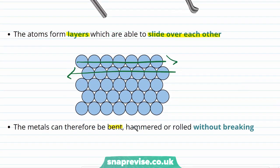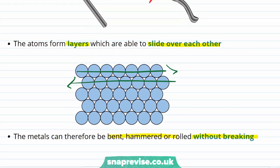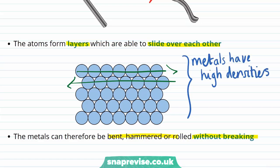This layered structure means that metals can be bent, hammered or rolled without breaking. A final point that you can see from this diagram is that metals have high densities. This is because they contain lots of ions packed close together with not very many gaps within their structure.